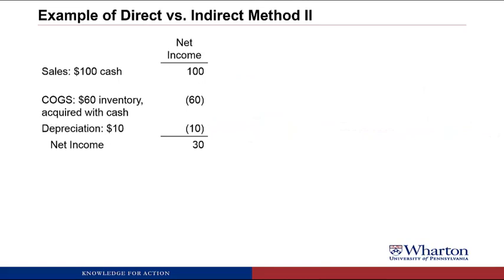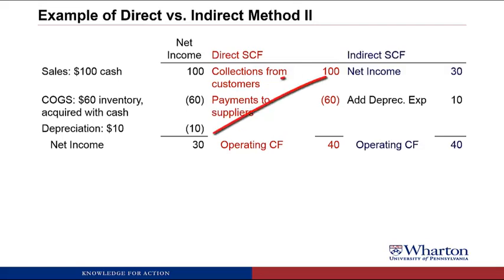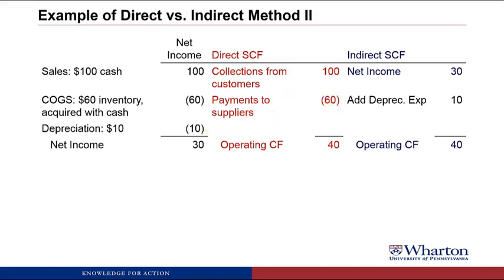Now let's make this more complicated and bring in depreciation expense. We start with cash sales and cash COGS like in the prior example, but now the company has a $10 non-cash depreciation expense, giving net income of $30. Under the direct method, we have cash collections from customers and cash payments to suppliers — no cash flow for depreciation — so we get the same operating cash flow of $40. For the indirect method, we start with net income of $30, add back depreciation expense of $10 since it's a non-cash expense. There are no changes in working capital. So we get operating cash flow of $40 under the indirect method — the same answer as the direct method, which always has to be the case.